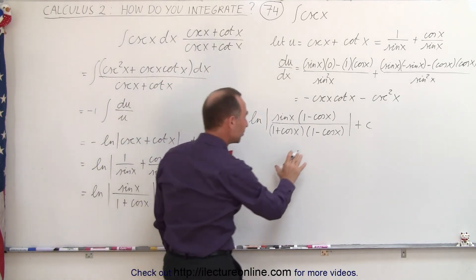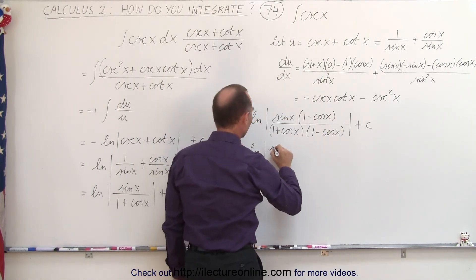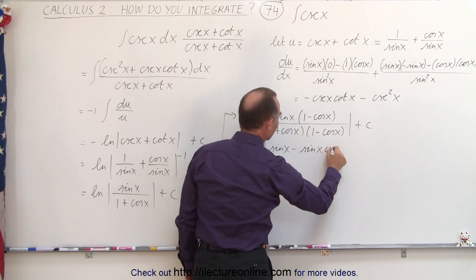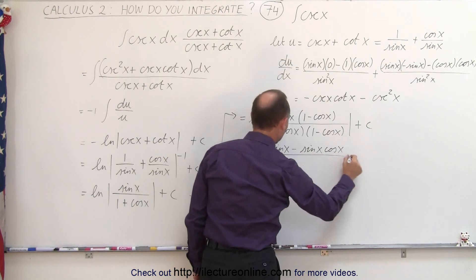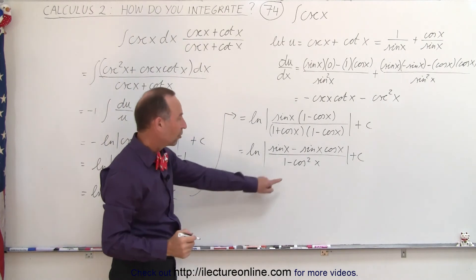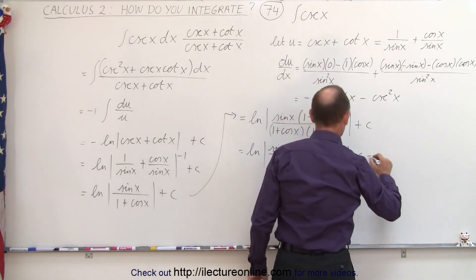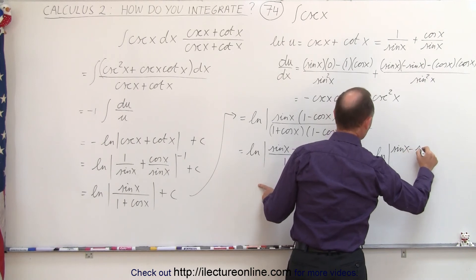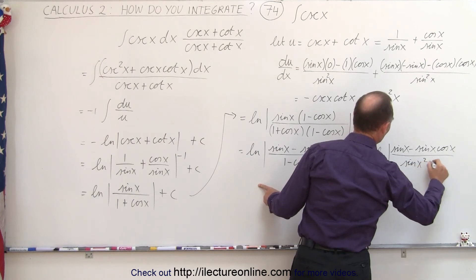Let's see what we end up with when we multiply this out. This equals the natural log of — in the numerator, sine of x minus sine of x times cosine of x. The denominator ends up with 1 minus cosine squared of x, which of course can be changed into sine squared of x. So this can be written as the natural log of sine of x minus sine of x times cosine of x, divided by sine squared of x.